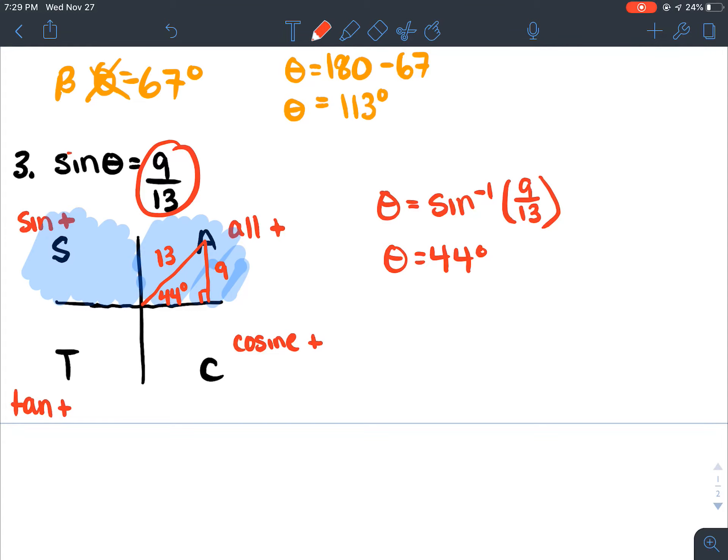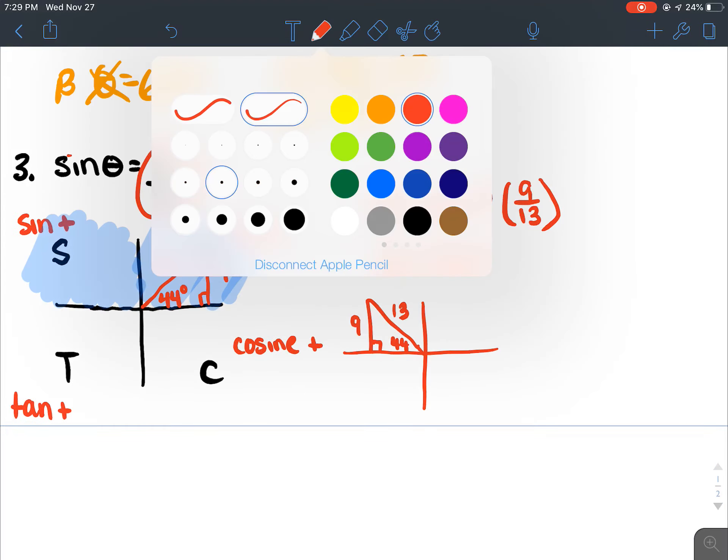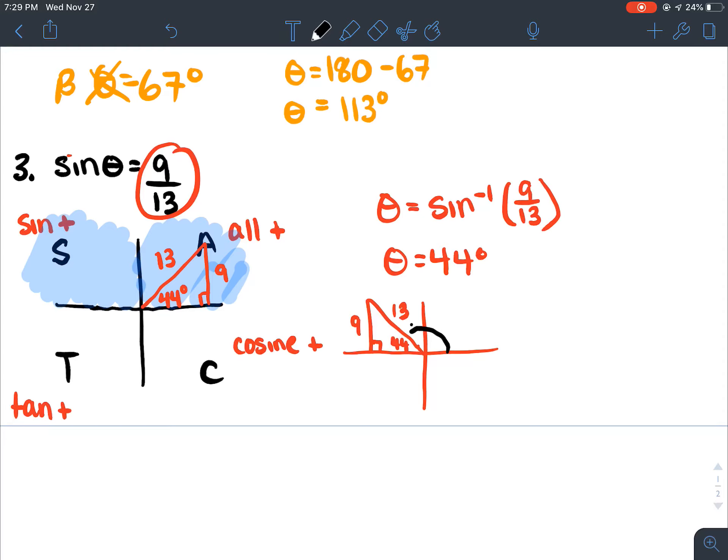But we could also have a triangle in quadrant two. So now I just have to draw the same exact triangle, like 9 and 13, and it would have the same related angle, 44 degrees, but in this case, I'm trying to find the principal angle here. So I would just do 180 minus 44, which equals 136.